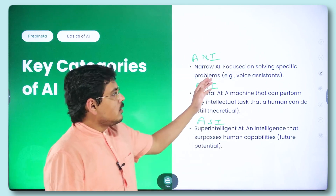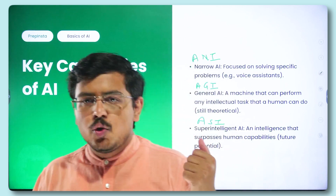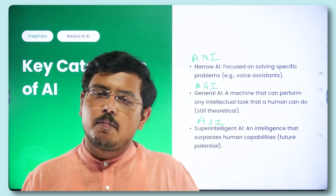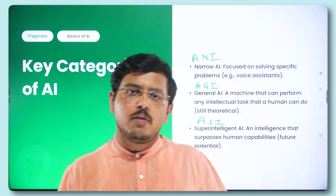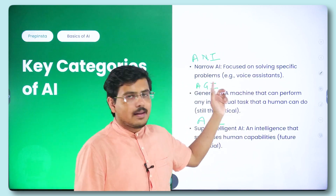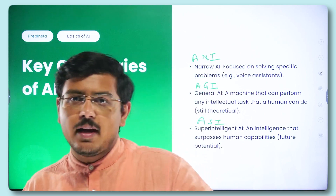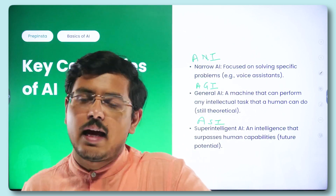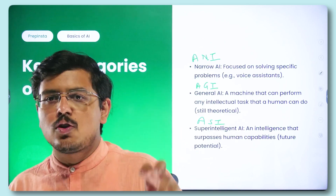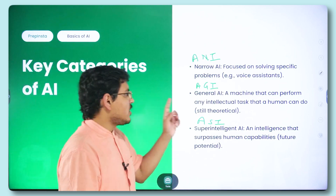Narrow AI is focused on solving specific problems. For example, GitHub Copilot is AI-based and can help you complete your code; ChatGPT can assist you in various tasks. Disease detectors built using AI and ML are also narrow AI because they are targeted to a specific task — solving that one particular problem.